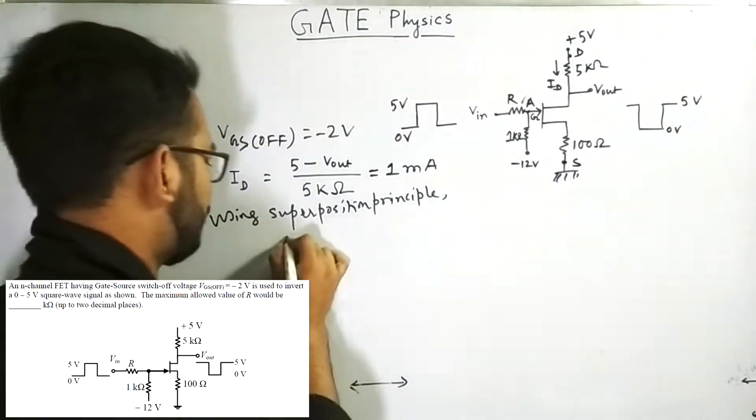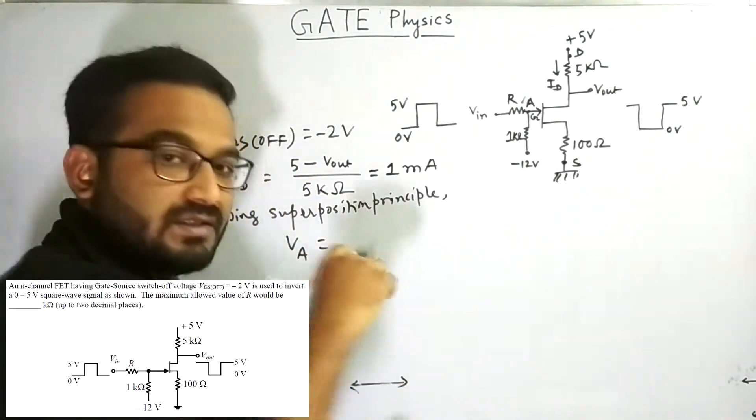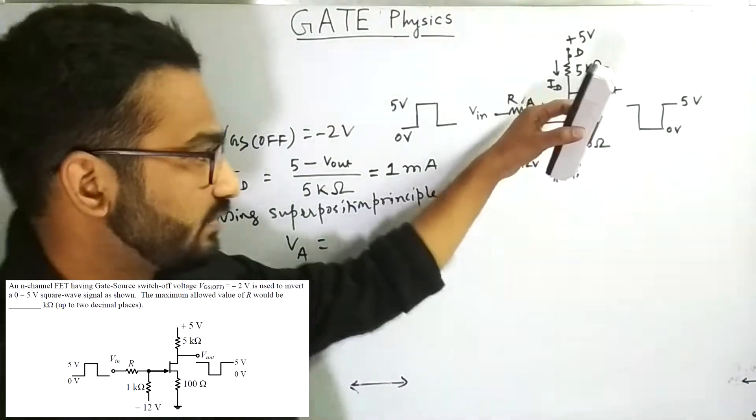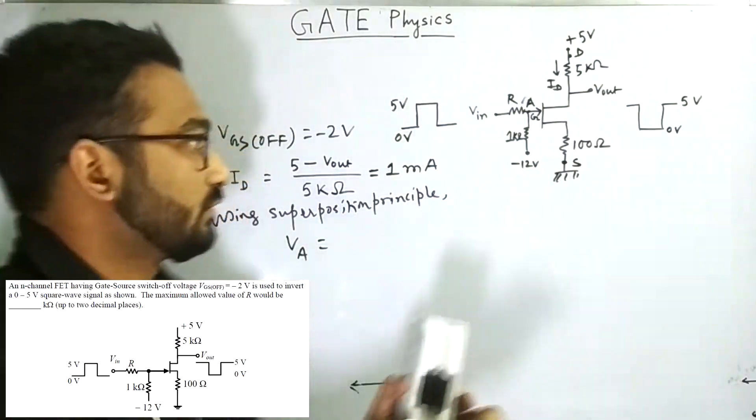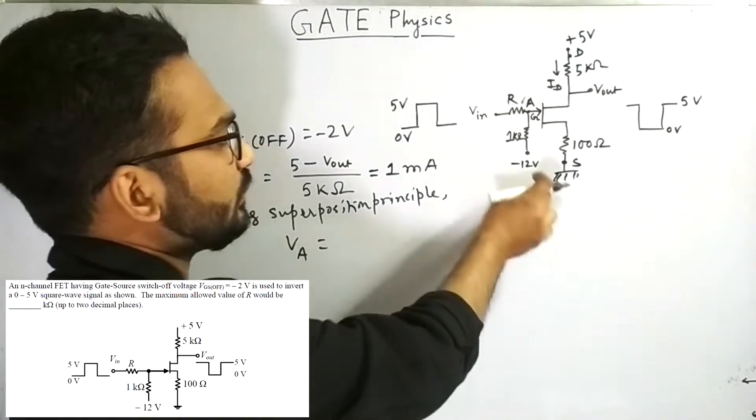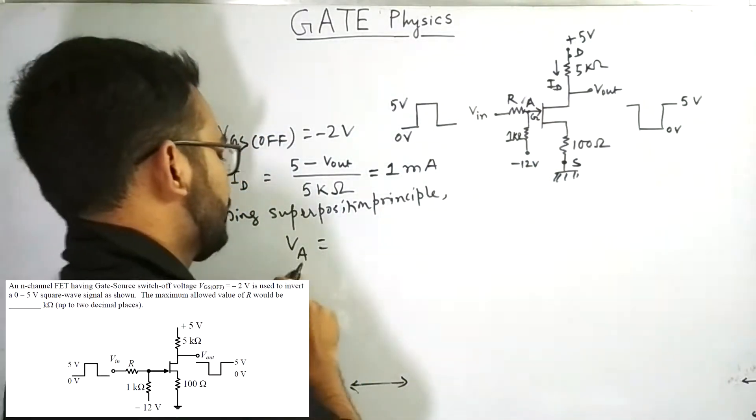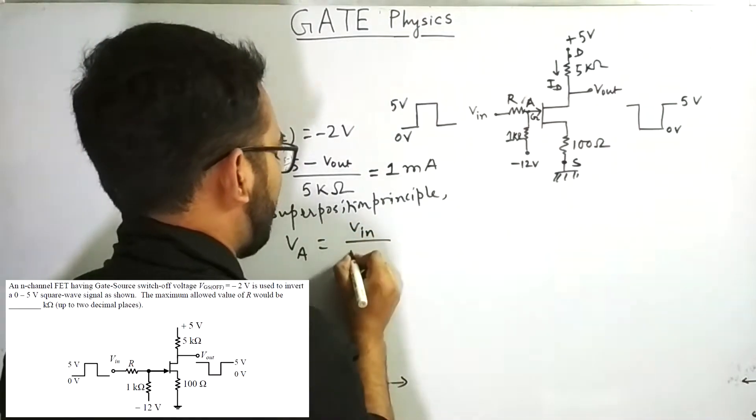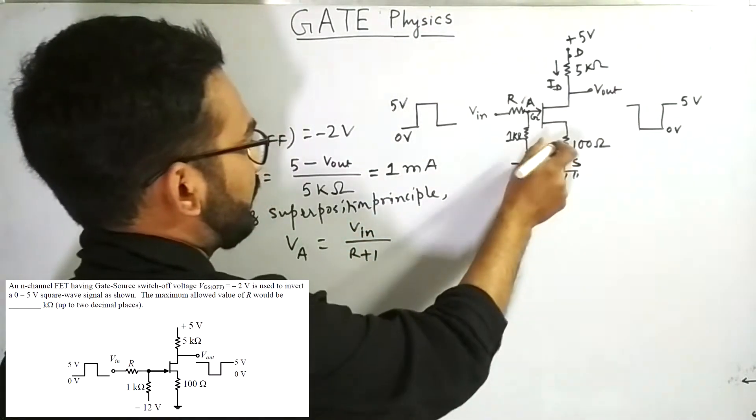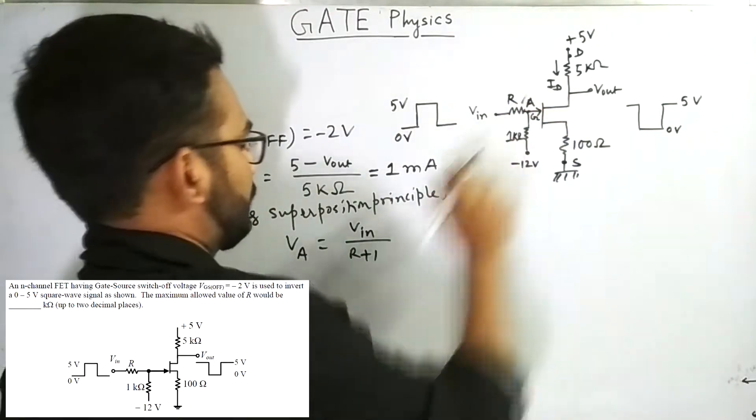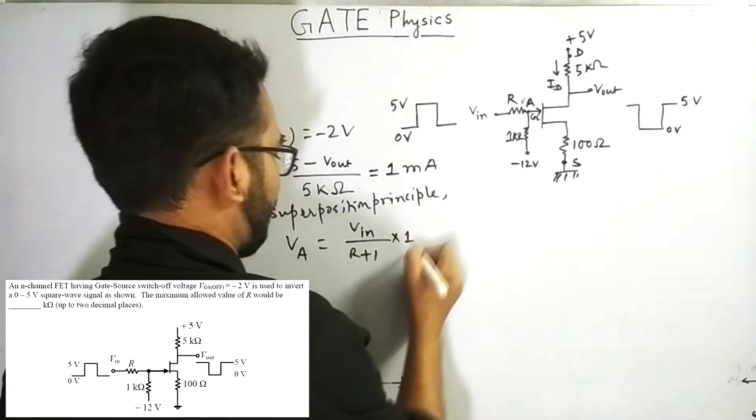Now to calculate the potential of this point, we will make this potential to be 0 and other time we will make this potential to be 0. So first what we are doing, the net potential at this point VA will be the sum of them. So firstly, we are equating this minus 12 volt to 0. So then what is the potential? V in by R plus 1 into 1.